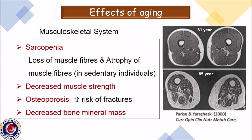The musculoskeletal system shows sarcopenia. As seen in the cross-section images comparing a 31-year-old and an 85-year-old, there is a decrease in the number of muscle fibers and atrophy of existing muscle fibers, changes predominantly seen in sedentary individuals, resulting in decreased muscle strength. Osteoporotic changes are seen in bone, which increases the risk of fractures, and bone mineral density also decreases.